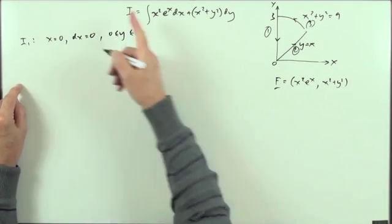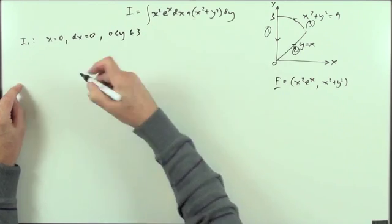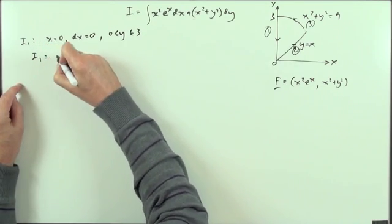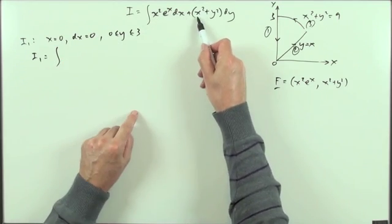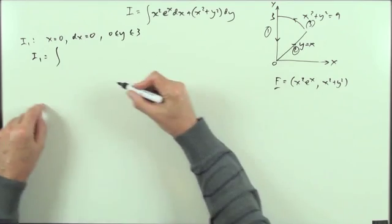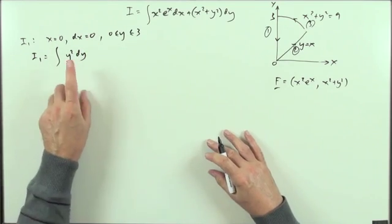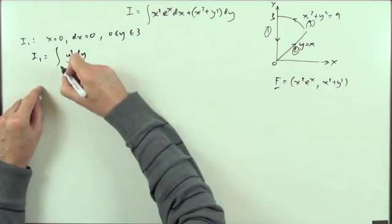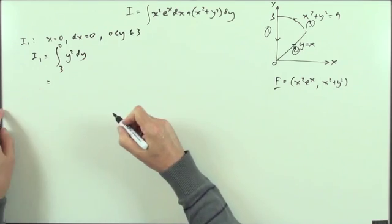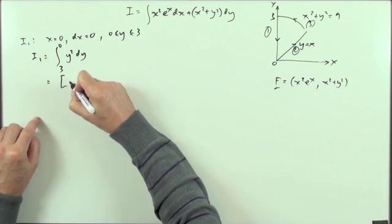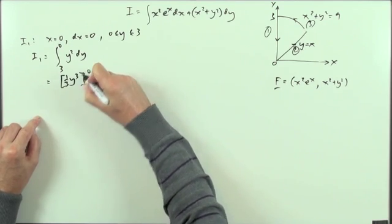Writing that out, with x equal to zero the whole x-component goes, and I'm just left with y squared dy. I don't require a parameter because I'm only left with one variable. And y went from three down to zero, so I1 is simply one-third of y cubed evaluated from three to zero.